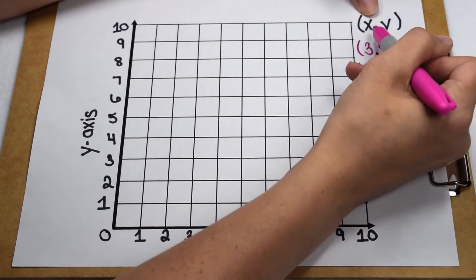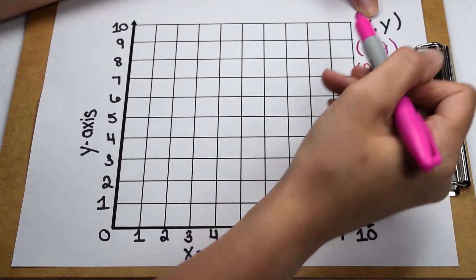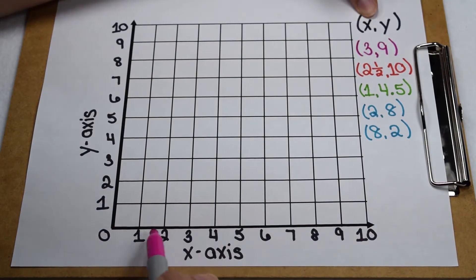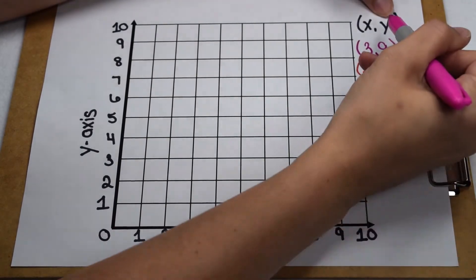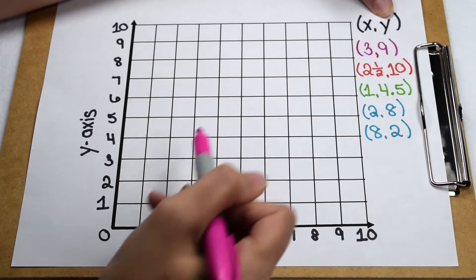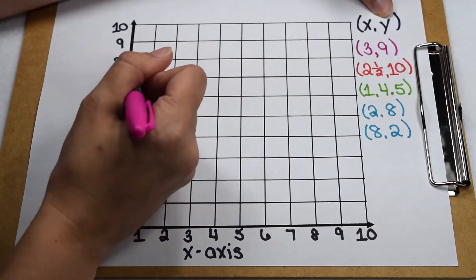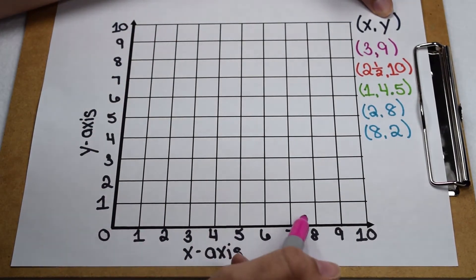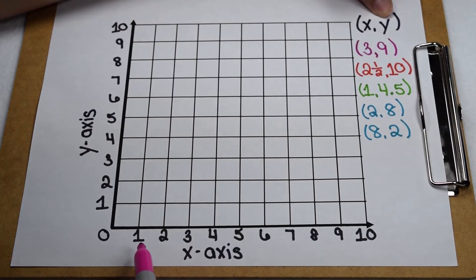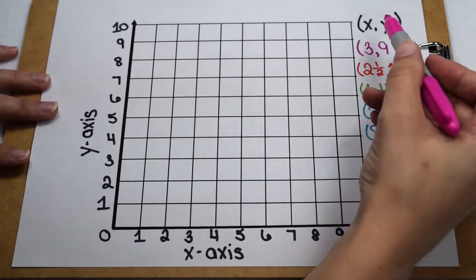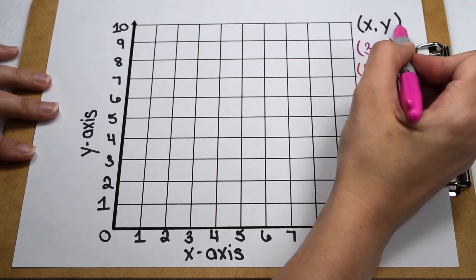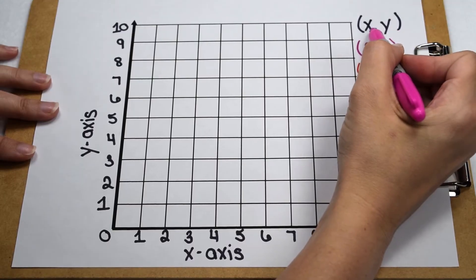In our ordered pair, our first value is our x value. We're going to plot that x value on our horizontal x-axis. Our second value is our y value. We're going to plot that information on our vertical y-axis. The point where our x value and our y value intersect is where we can plot our point. You'll notice when we're working with an ordered pair that it's inside a set of parentheses with a comma separating them.